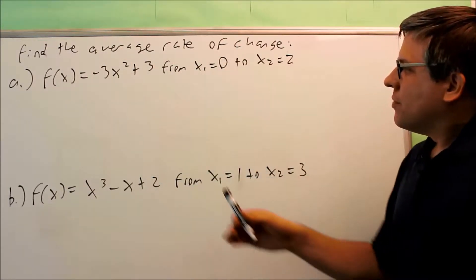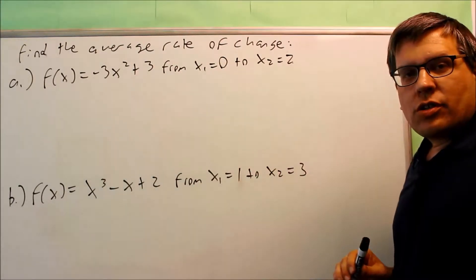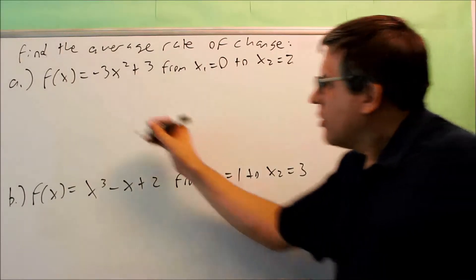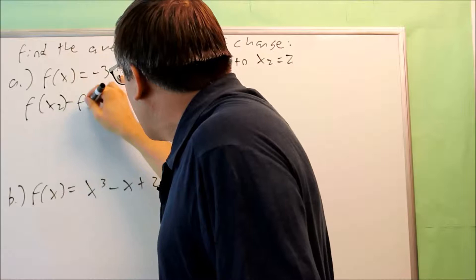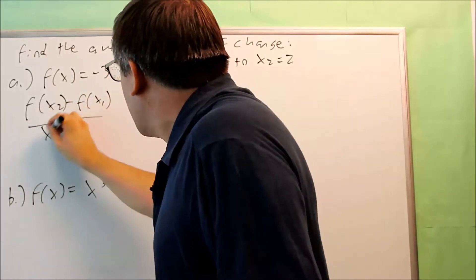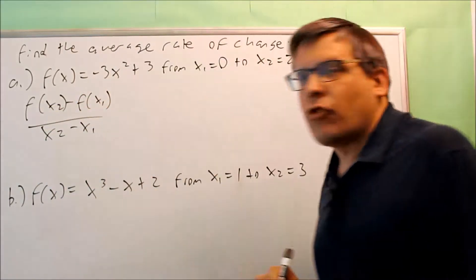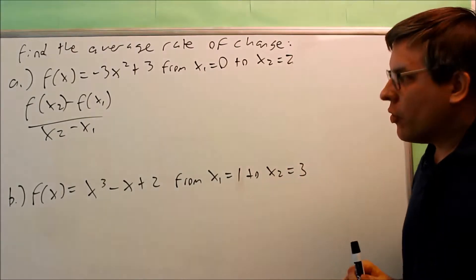We're going to find the average rate of change. So average rate of change, the formula for it is this one. It's f of x2 minus f of x1 all over x2 minus x1. That's the formula that we're going to use for both of these.